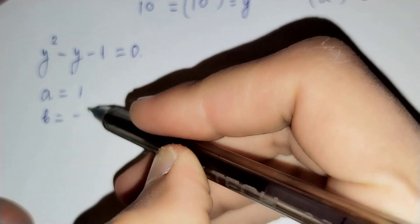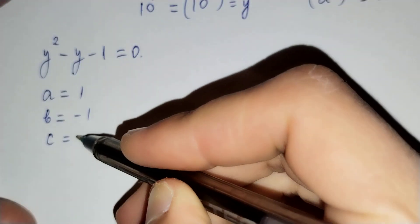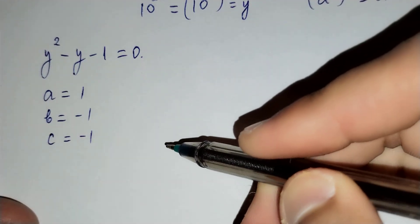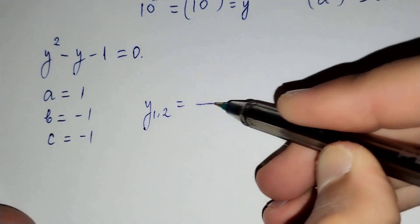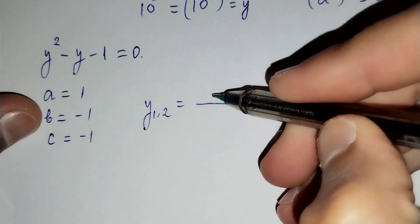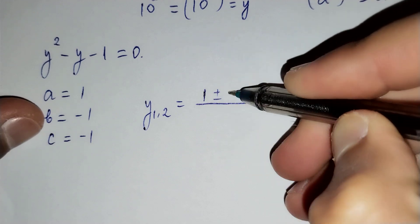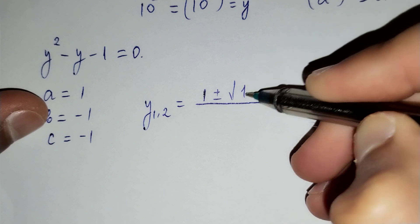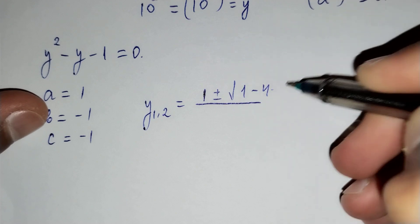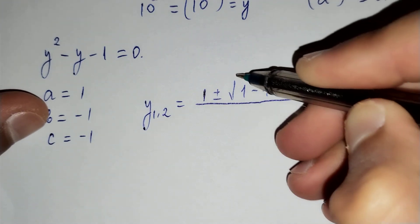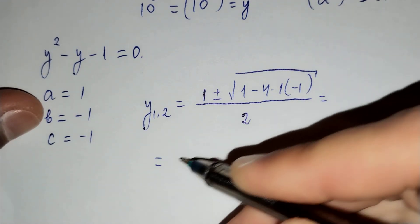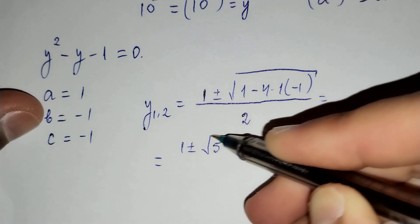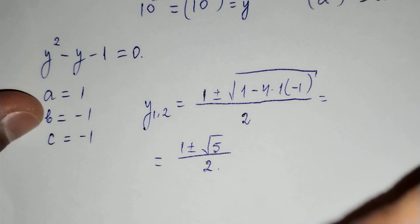For the quadratic equation, a equals to 1, b equals to negative 1, and c equals to negative 1. Using the quadratic formula: y₁ and y₂ equals to negative b plus or minus square root of b squared minus 4 times a times c, over 2a. This gives 1 plus or minus square root of 5, over 2.